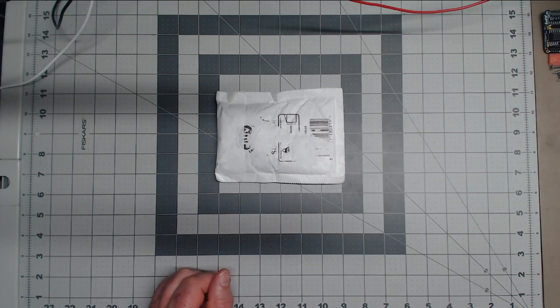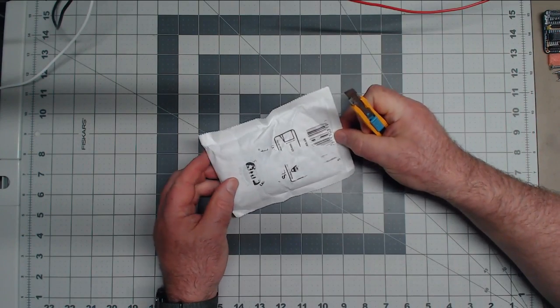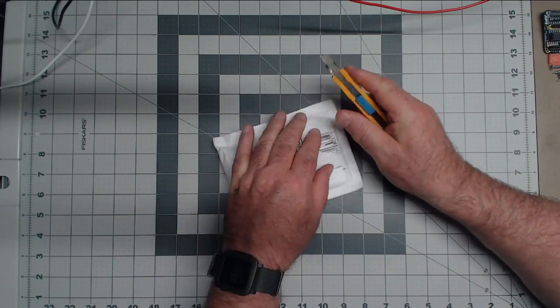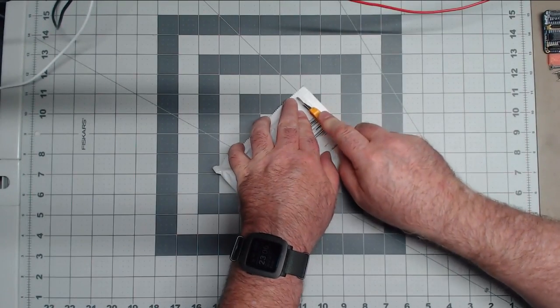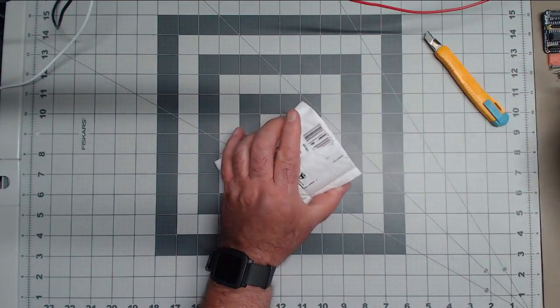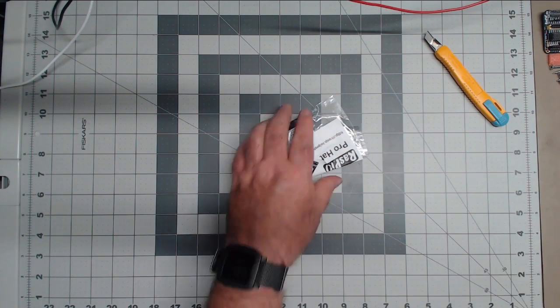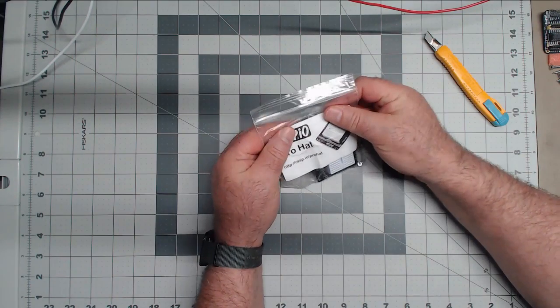Mailbag number two. This is a special one. This is a Kickstarter I backed, I believe. I'll confirm this when I open it. This is another one of Alex Eames's projects. This is the Raspio Pro Hat.